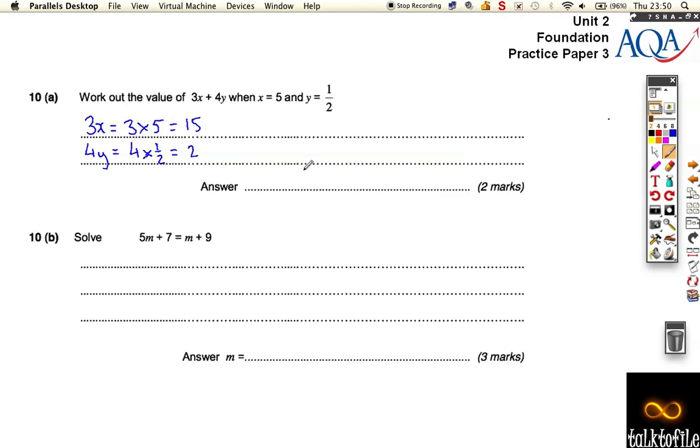So we get a total of 17 when we add them together, 3x plus 4y. Now we're going to solve this equation down here, and this is a little bit tricky.